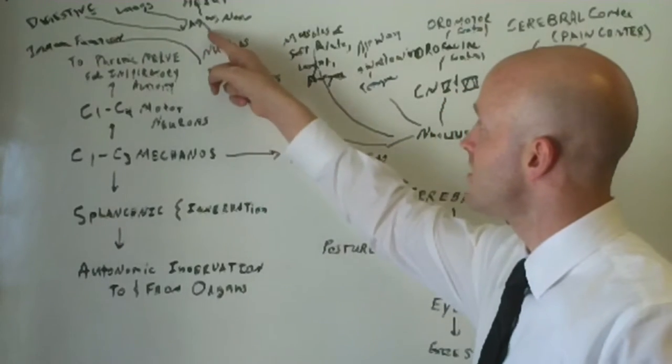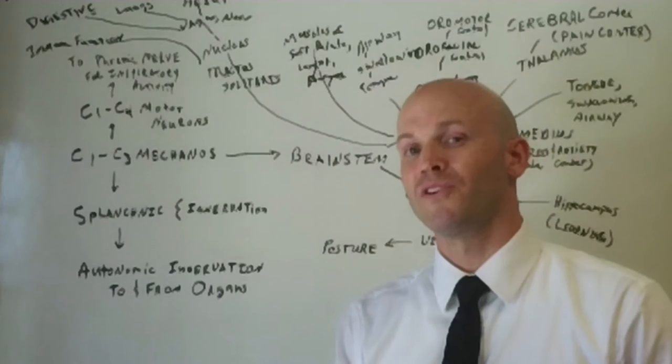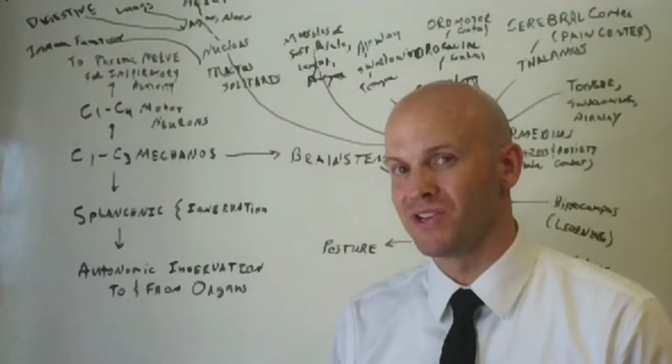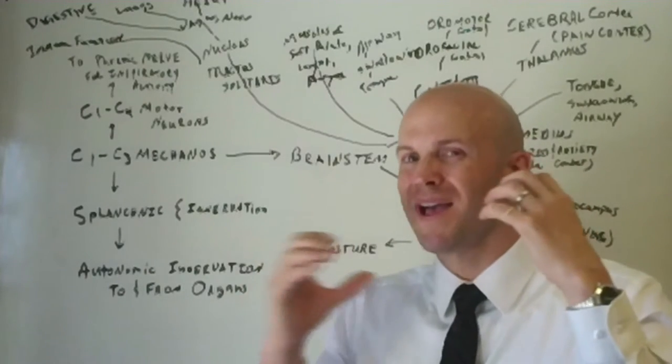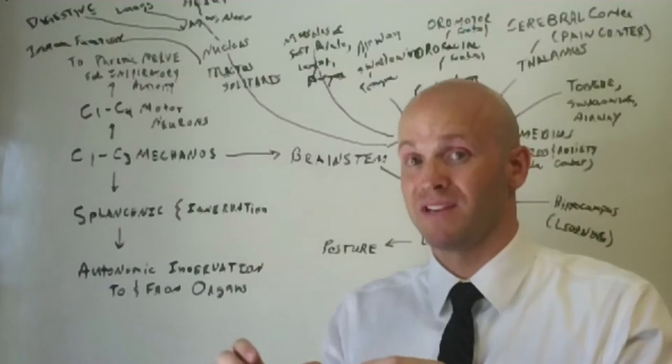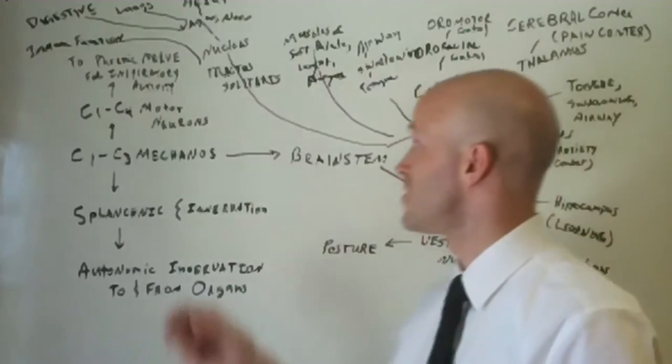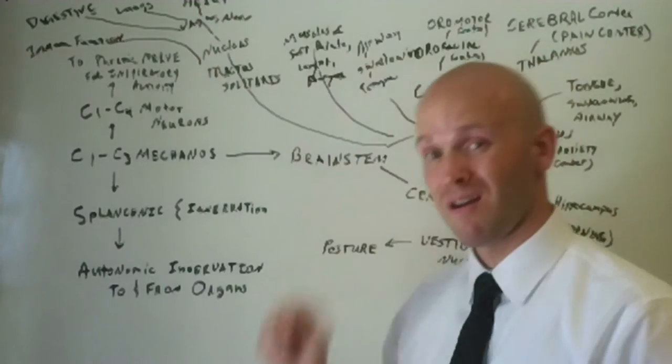And look at this, vagus nerve. That's the one that Christopher Reeve, or Superman, injured. And if you remember, he had a machine literally to control everything in his body. Separate machines, oftentimes, to control the different functions. He had a certain machine controlling his heart.